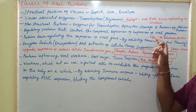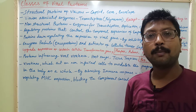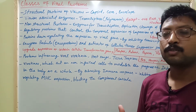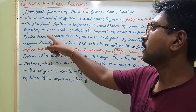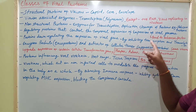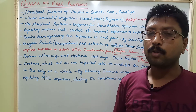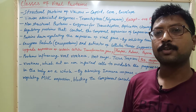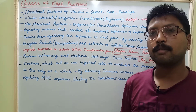Next are the regulatory proteins that control the temporal sequence of expression of the viral genome. These proteins generally bind to the enhancer and are responsible for triggering transcription and translation. There are also proteins that down-regulate the expression of viral genes by inhibiting transcription and translation, stopping or diminishing these processes once they are completed.